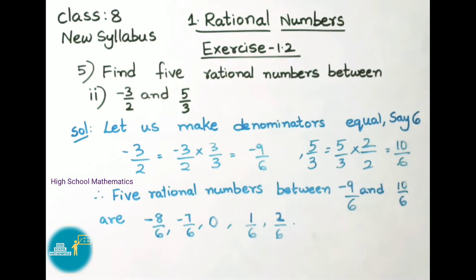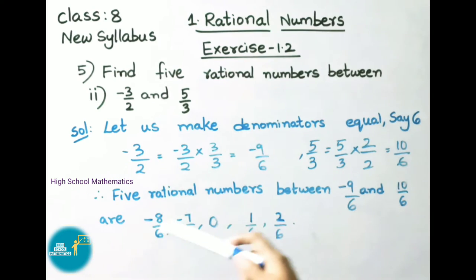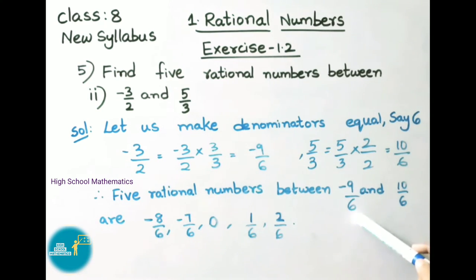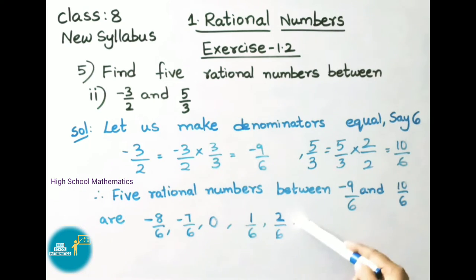Now we have to take any 5 rational numbers between -9/6 and 10/6. Therefore 5 rational numbers between -9/6 and 10/6 are: -8/6, -7/6, 0, 1/6, and 2/6.